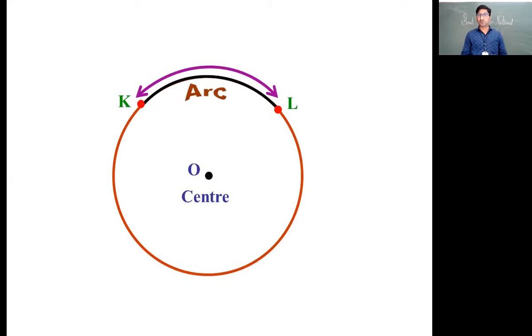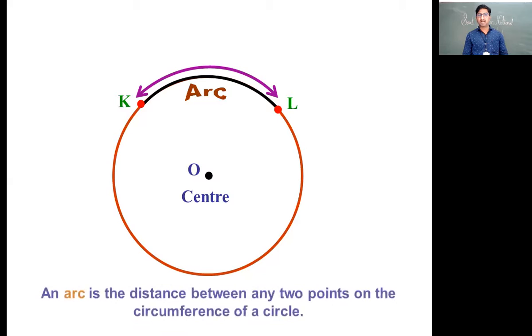Here we can see two different parts are made. One is smaller, colored in black. And one is pink color, the major part or the big part of circle. The arc is distance between any two points on the circumference of circle.